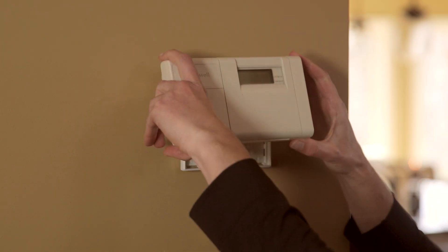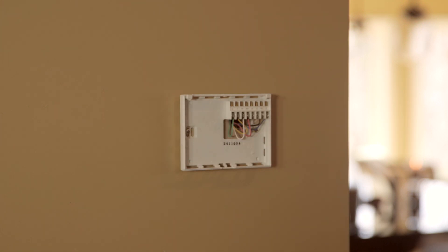Next, remove your old thermostat but keep the wall plate with the wires attached. Most thermostats will pop off when pulled, but others might have screws holding the thermostat onto the wall plate.